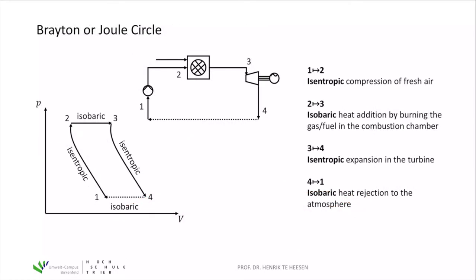If you look at the thermodynamic cycle describing the process in a gas power plant, this cycle is called the Brayton or Joule cycle. On the lower left-hand side you see the P-V diagram with four steps. Starting at point number one we have fresh air, then we have the compression of fresh air in the compressor — that's an isentropic process. This process is very fast, so there's no heat exchange with the environment; isentropic means delta Q equals zero.